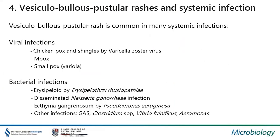Vesiculobullous and pustular rashes in systemic infection are common in many systemic infections, majorly viral — chicken pox and shingles caused by varicella-zoster virus, Mpox, smallpox — but also in bacterial infections like erysipeloid, disseminated Neisseria gonorrhoeae infection, ecthyma gangrenosum seen in Pseudomonas aeruginosa, and some group A streptococcus, Vibrio vulnificus, and Aeromonas systemic infections where vesiculobullous pustular rashes can also be seen.